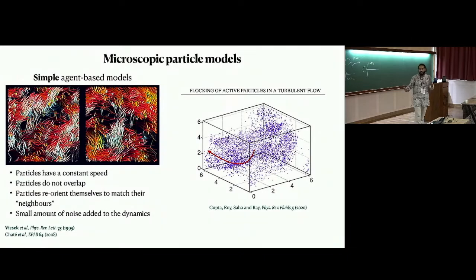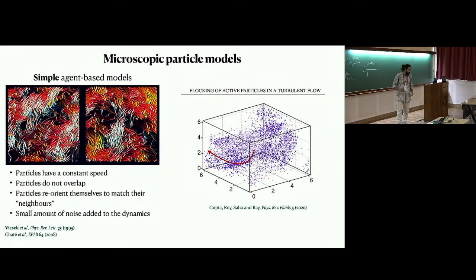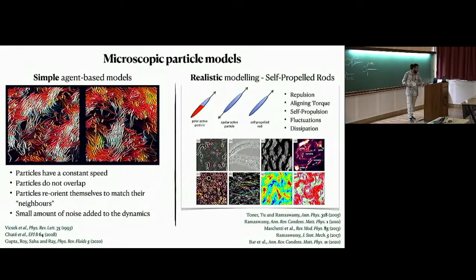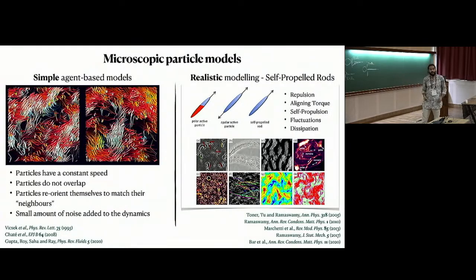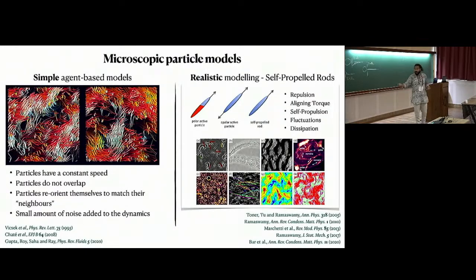Samridhi and co-workers also tried putting these particles in an actual turbulent flow, where the background flow itself is turbulent and particles align with Vicsek interactions to study collective motion. There are more detailed models where you can have self-propelled rods — elongated polar or nematic rods — with more detailed interactions, fluctuations, and dissipation. This has been very successful in simulating many kinds of active matter systems.